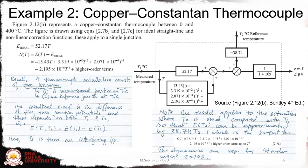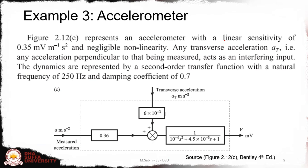Next is an example of an accelerometer, which represents the linear sensitivity of around 0.35 millivolts per meter per second squared. Nonlinearity is negligible, so it is not present. Here, any transverse acceleration—that is, any acceleration perpendicular to that being measured—acts as an interfering input, and the sensitivity constant is 6×10⁻³. The dynamics are represented by a second-order transfer function with the natural frequency of 250 Hz and a damping coefficient of 0.7, so ζ is 0.7.